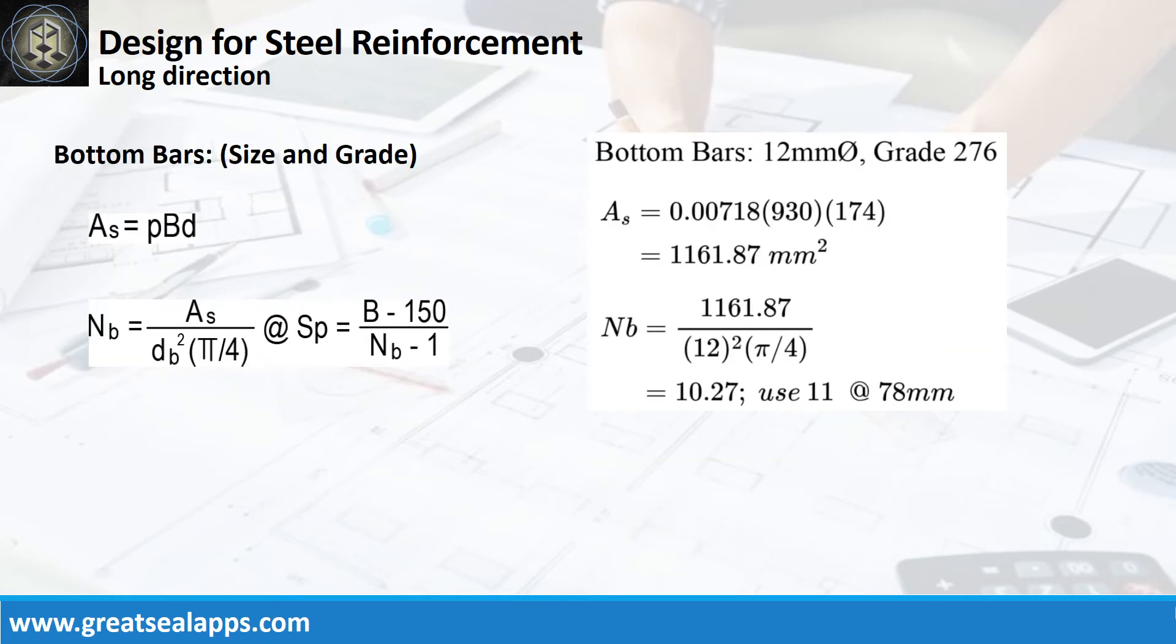Continue at long direction. Given Rho equals 0.00718, B equals 930mm, and D equals 174mm, the area of steel for long direction bars is 1161.87 mm squared, and the number of bars for 12mm bar is 11.